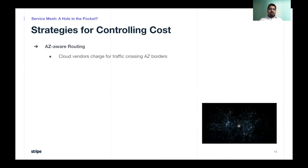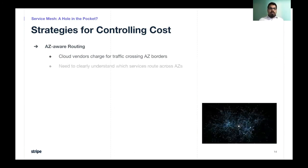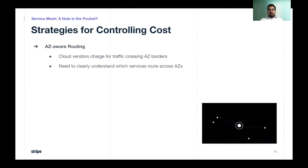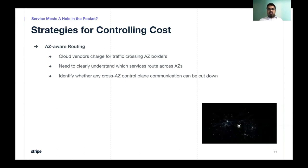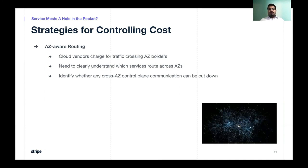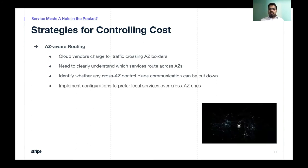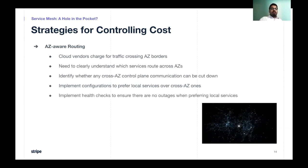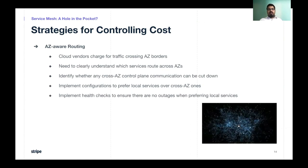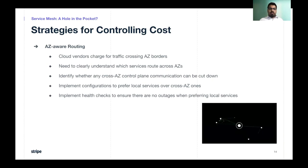Let's look at how AZ-aware routing can increase your spend. Cloud vendors charge for traffic that crosses AZ borders, so you need to identify which services route across AZs — this could include the control plane communication itself. Once you identify which services route across AZs, it becomes easier to determine whether that is really required or can be cut down. This is a benefit of using a service mesh: you can now control services and their routing behaviors so they prefer local services over ones running remotely. You need to take care, though, that if there is a local outage your service is still up and running — by preferring a remote service over a failing local one — and for that you may want to implement health checks or outlier detection.